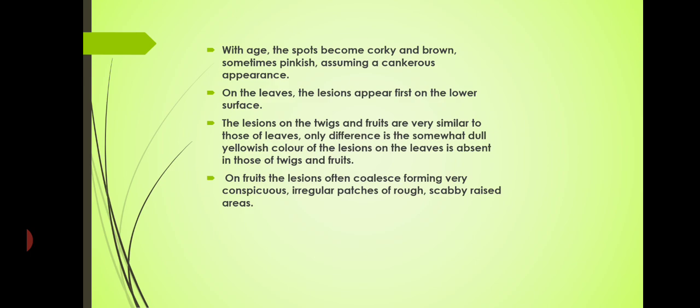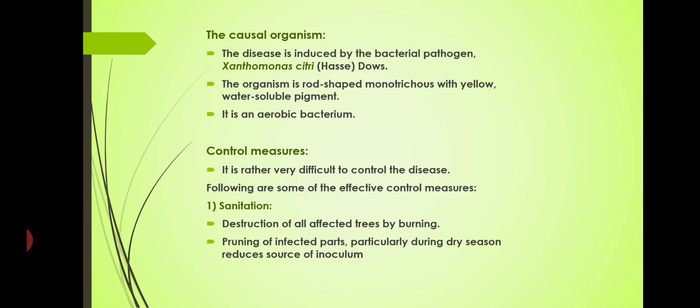On fruits the lesions often coalesce, forming very conspicuous irregular patches on rough, scabby and raised areas. The causal organism: it is a bacterial disease caused by Xanthomonas citri. Citri means citrus fruit, and that particular Xanthomonas species is infecting citrus. The organism is rod-shaped, monotrichous bacteria with a yellow water-soluble pigment, and it is an aerobic bacteria.